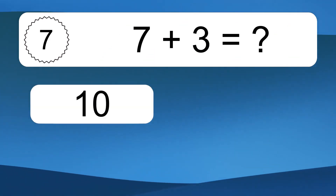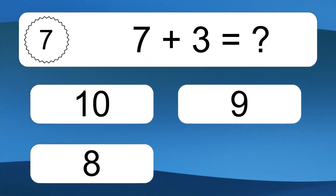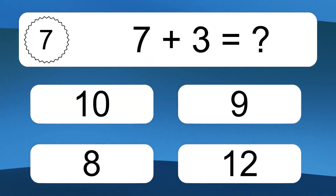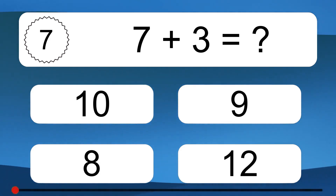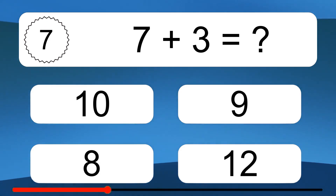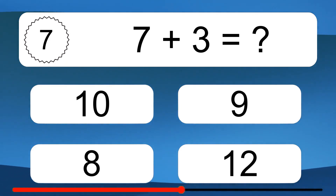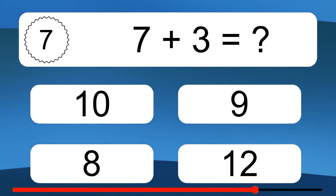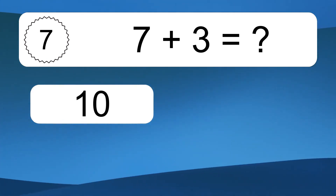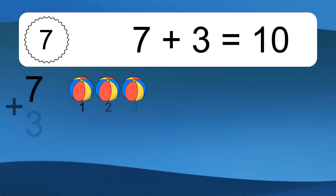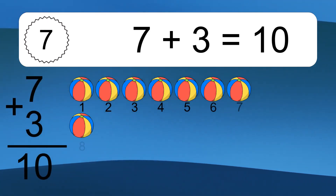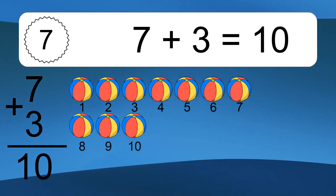7 plus 3 equals what? 7 plus 3 equals 10.